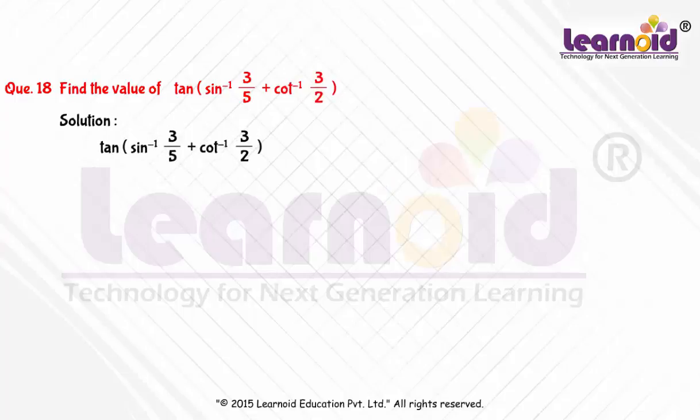To solve this, we will use identities. Sin inverse a by b is equal to tan inverse a by square root of b square minus a square. Cot inverse a by b is equal to tan inverse b by a to convert the expression inside bracket in tan inverse form.